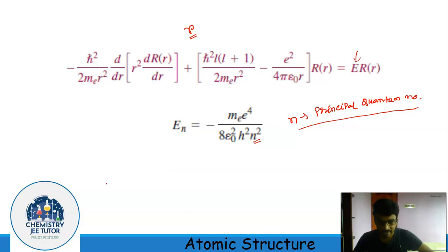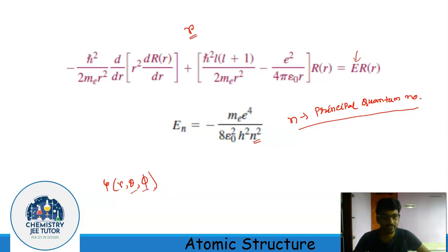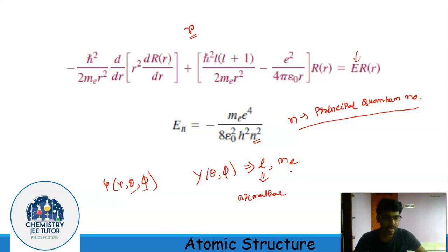Though the energy depends only on one quantum number — the principal quantum number — the wave function ψ will depend on three quantum numbers, which we get from the boundary conditions. The angular part Y(θ, φ) gives rise to two more quantum numbers, represented by L and M_L, where L is called the azimuthal quantum number or subsidiary quantum number, and M_L is called the magnetic quantum number.